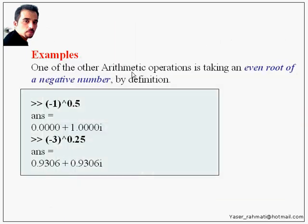One of the other arithmetic operations is taking an even root of a negative number. By definition, minus 1 to the power of 0.5, by typing this code, you can get this answer, plus 1i. And by typing this code, minus 3 to the power of 0.25, we can get this answer, 0.93 plus 0.93i.